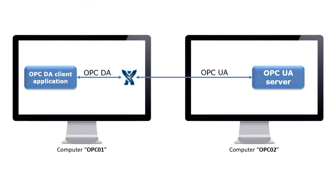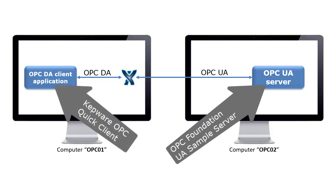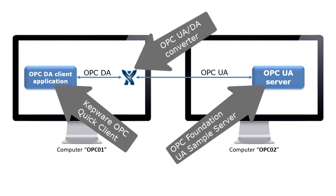In this example we are running OPC Foundation UA sample server on computer OPC 02. We have Kepware OPC Quick Client, which is an OPC Classic DA application, on computer OPC 01. Since OPC Quick Client is unable to connect directly to an OPC UA server, we need to put a converter in the middle.